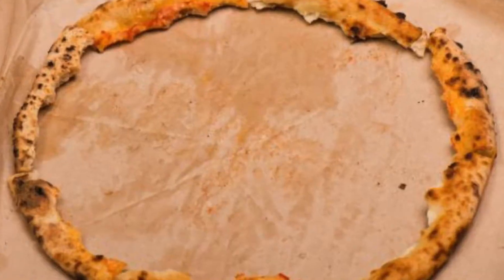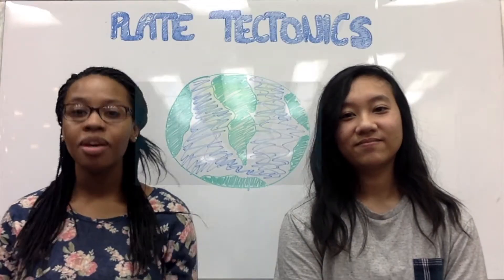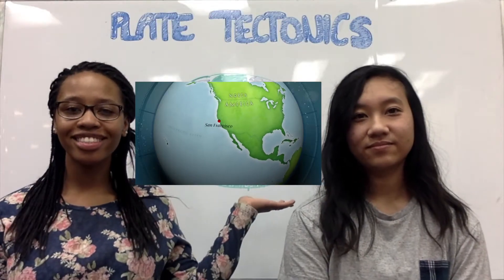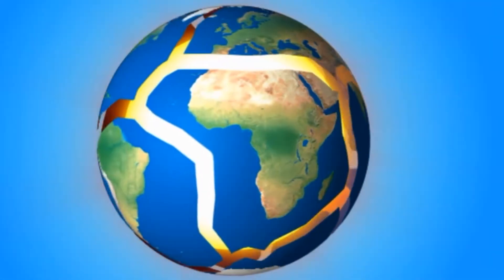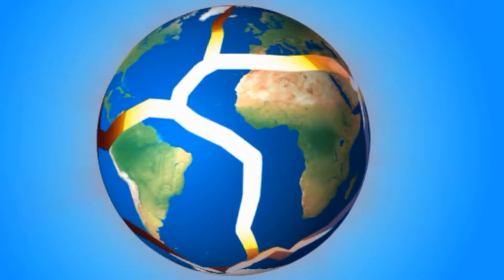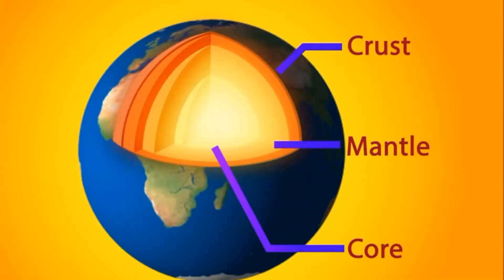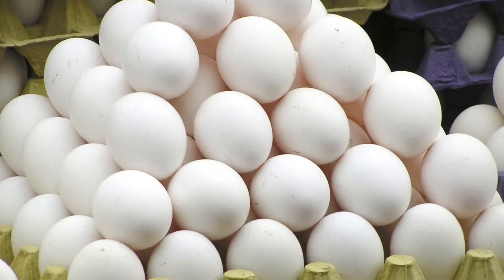Today we're going to talk about crust. Not that type of crust — Earth's crust. Earth's crust, also known as the lithosphere, according to plate theory, is the rigid outer layer that is somewhat fragile, like the shell of a hard-boiled egg.